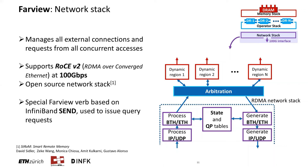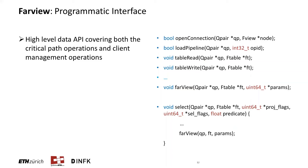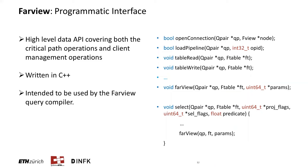In terms of programming, Farview exposes a simple high-level data API covering both the critical path operations and connection management operations. The data API is written in C++, but other front ends can be used as well. It is intended to be used by the query compiler in Farview rather than directly by the client, and the development of this dedicated query compiler is the next target for the Farview project.